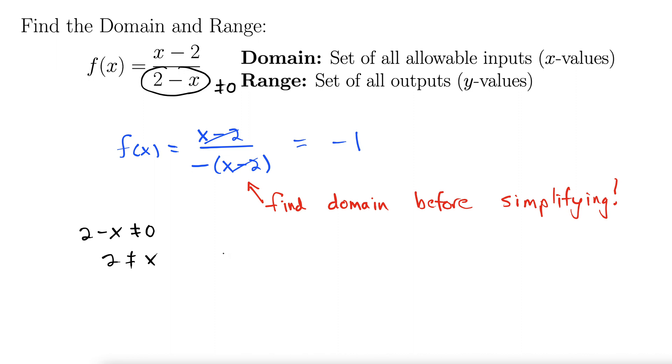So the domain is going to be everything except for that point. There's a couple ways to write this. The most compact way would be: x such that x does not equal 2. That's a fine answer.